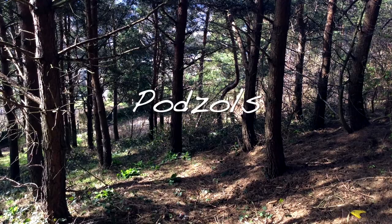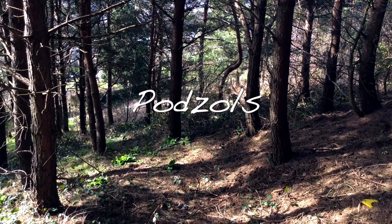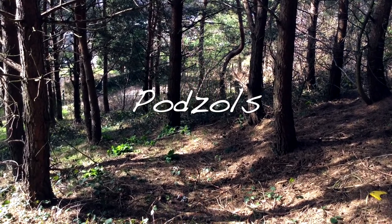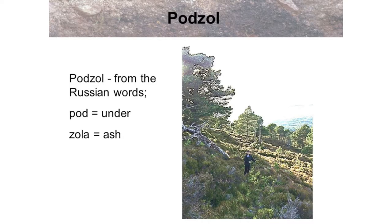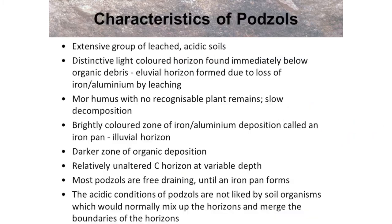We now move on to the second soil type: Podzols. Podzol comes from two Russian words — pod means 'under' and zola means 'ashes'. This picture shows a typical environment where a podzol would be found: a Scots pine forest with heather moorland on a hill summit. Podzols are widespread throughout Scotland and are generally associated with acid parent material, giving acid soils.